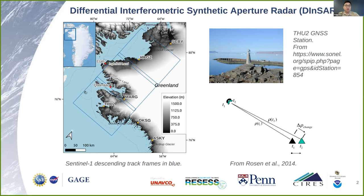Using DINSAR, we can visualize displacements over much broader areas. Each of the blue rectangles in the map are frames that the Sentinel-1 satellite returns to every 6 to 12 days. It requires two overlapping radar images of the same area taken at different times, and then we work to differentiate the phase information from the corresponding pixels in each of the images. The phase shift is proportional to change in position.